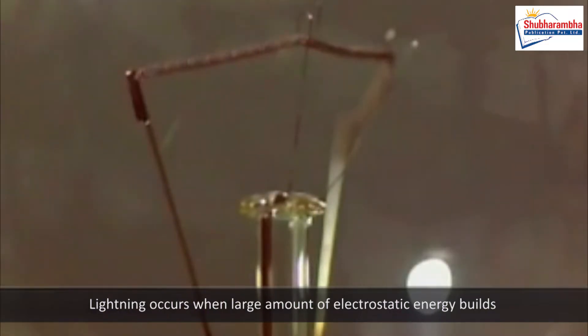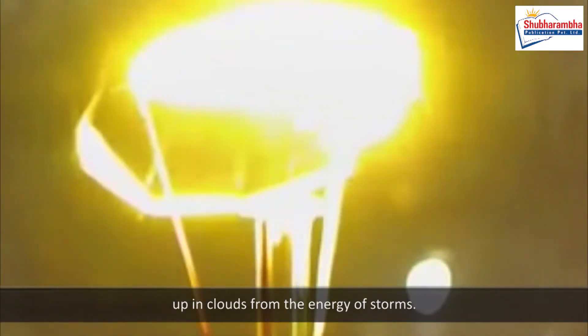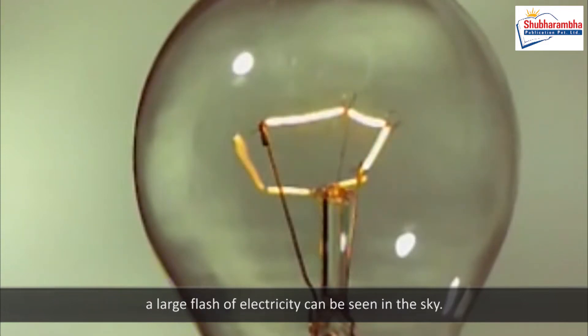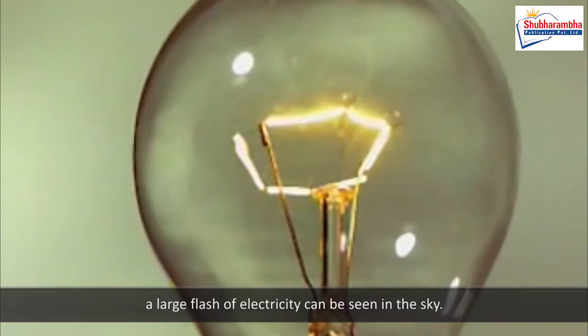Lightning occurs when large amounts of electrostatic energy build up in clouds from the energy of storms. When electrically charged regions of clouds discharge their energy, a large flash of electricity can be seen in the sky. It releases heat, light, and sound by the flow of electrons in the sky.